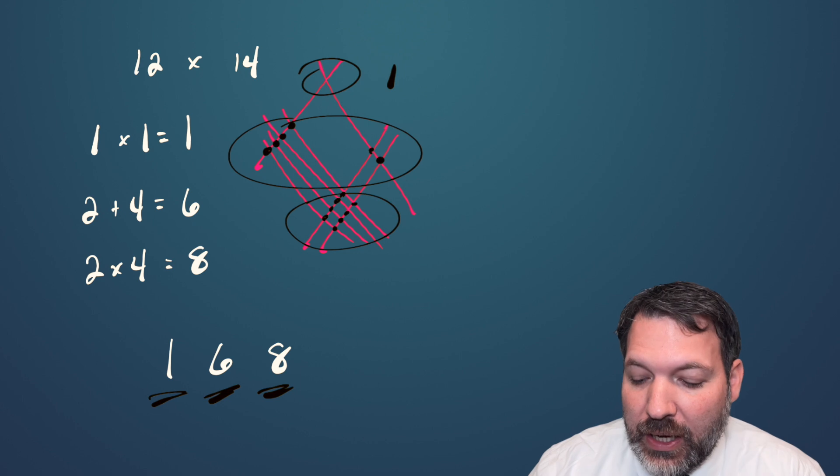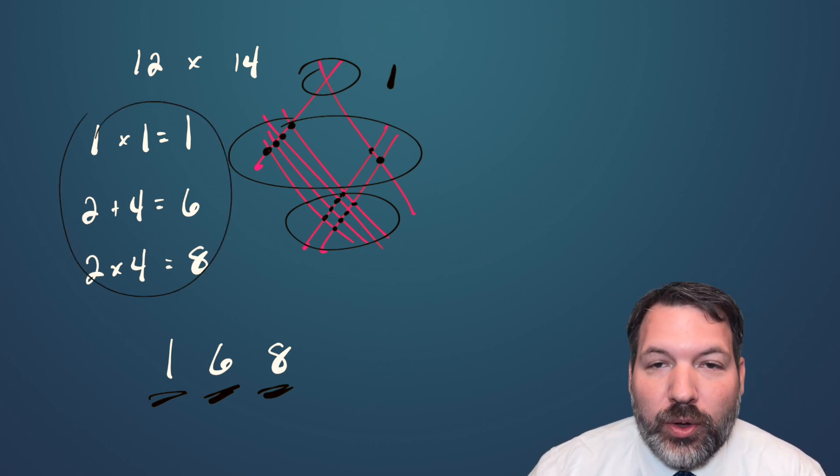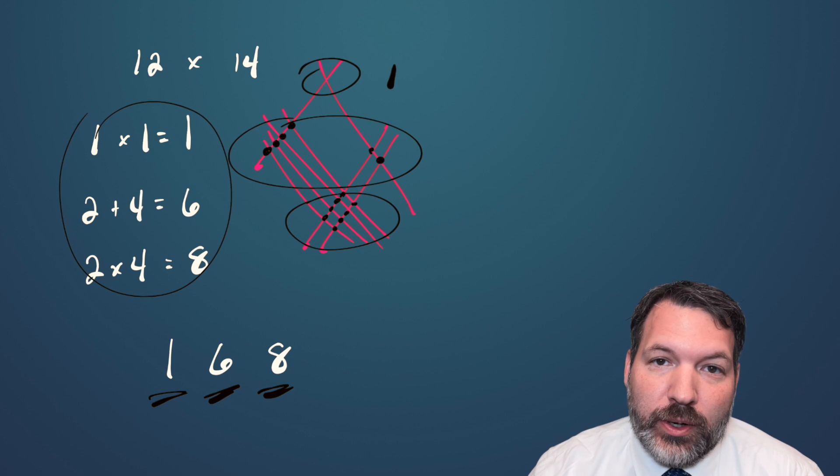The video obviously didn't show the lines, but that is what's happening here with the 1 times 1 equals 1, the 2 plus 4 equals 6, and the 2 times 4 equals 8.